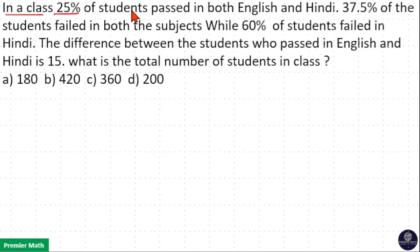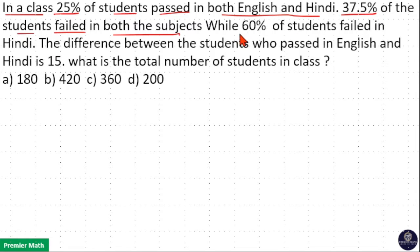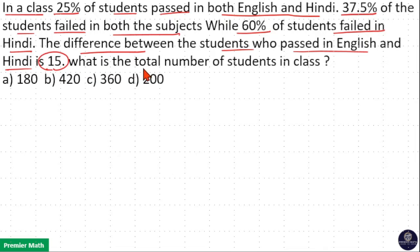In a class, 25% of students passed in both English and Hindi. 37.5% of students failed in both subjects, while 60% of students failed in Hindi. The difference between students who passed in English and Hindi is 15. What is the total number of students in the class?